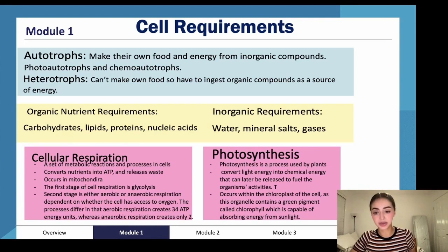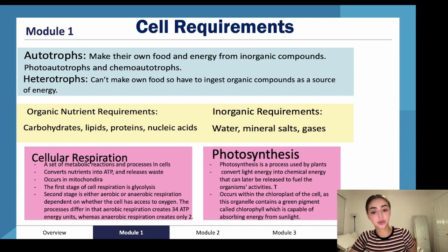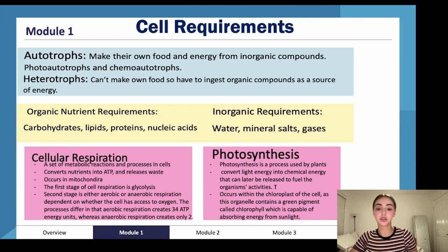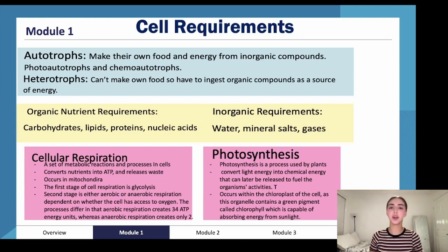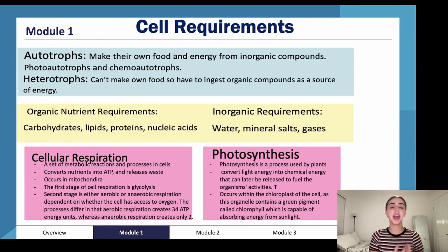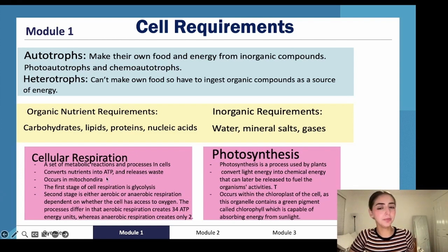The second stage is either aerobic or anaerobic respiration, depending on whether the cell has access to oxygen. Aerobic respiration creates 34 ATP units, whereas anaerobic respiration creates only 2. Aerobic uses oxygen, which means it's able to produce more energy. Anaerobic doesn't have access to oxygen, so it doesn't produce as much energy. ATP is the currency of energy.